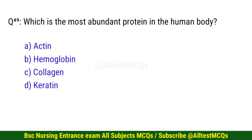Question number 49. Which is the most abundant protein in the human body? The right option is C: Collagen.